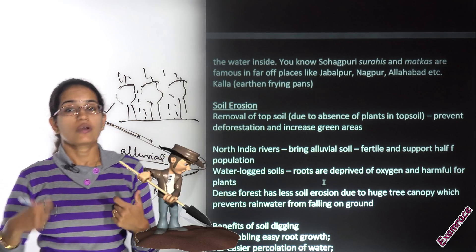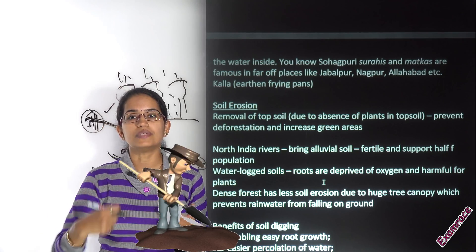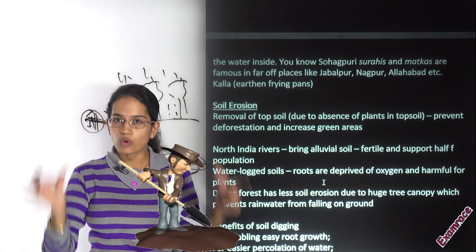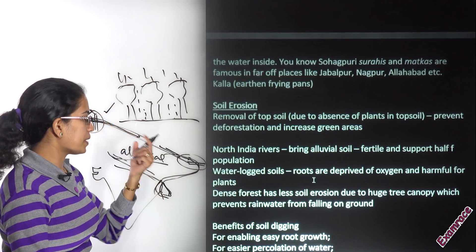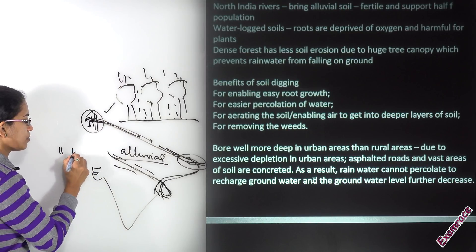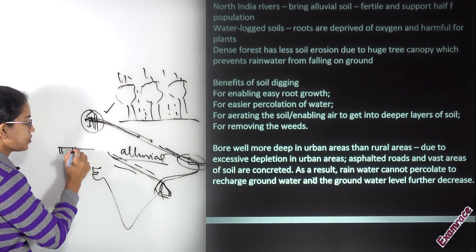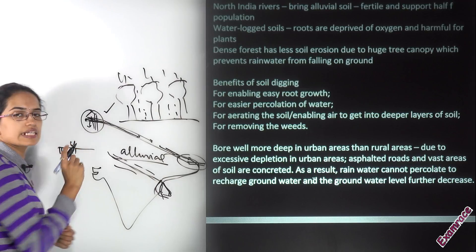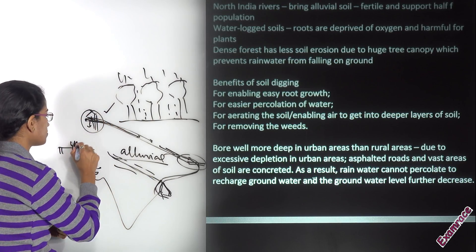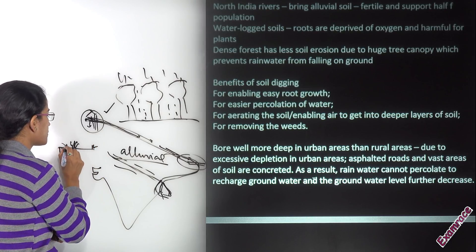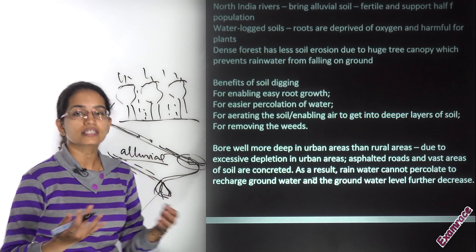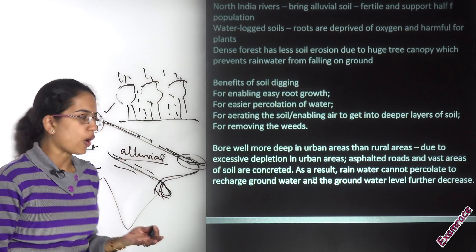Farmers in villages dig the soil — this increases aeration and develops more porosity, which increases percolation of water. Also, with digging, weeds — undesired plants — can be easily removed from the soil, and the available nutrients can go to the actual crop plant that is required.